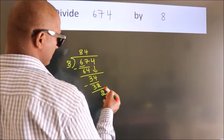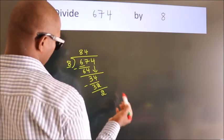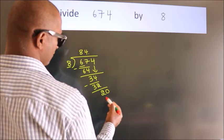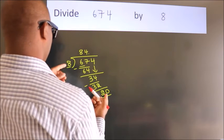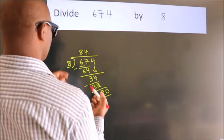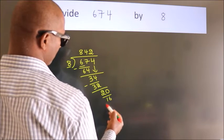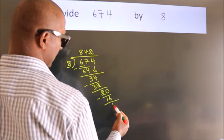After this, no more numbers to bring down. So what we do is we put a dot and take 0. So 20. A number close to 20 in the 8 table is 8 times 2 equals 16. Now we subtract. We get 4.